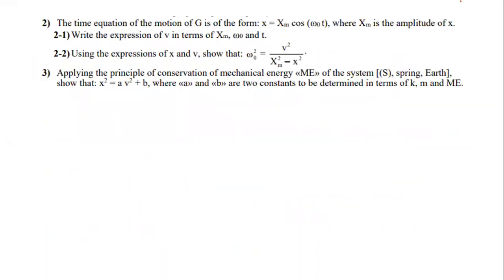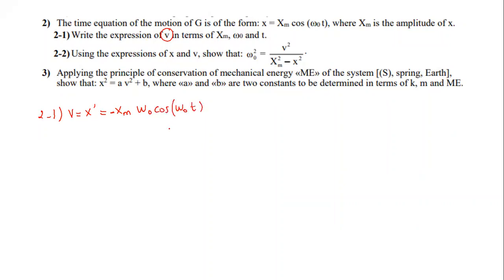The time equation of motion is X = XM·cos(ω₀T), where XM is the amplitude. To find V in terms of XM, ω₀, and T, we take the derivative of X: V = −XM·ω₀·sin(ω₀T). This is V expressed in terms of time.